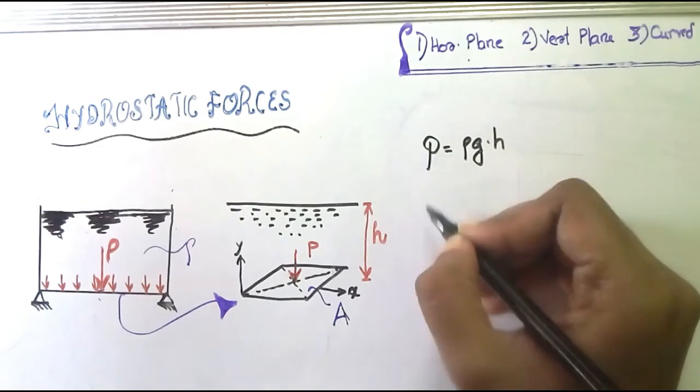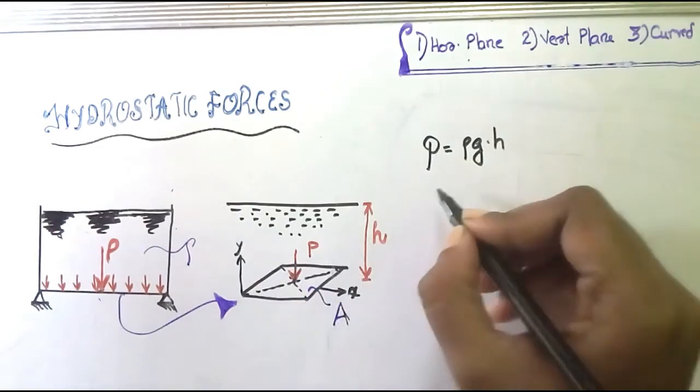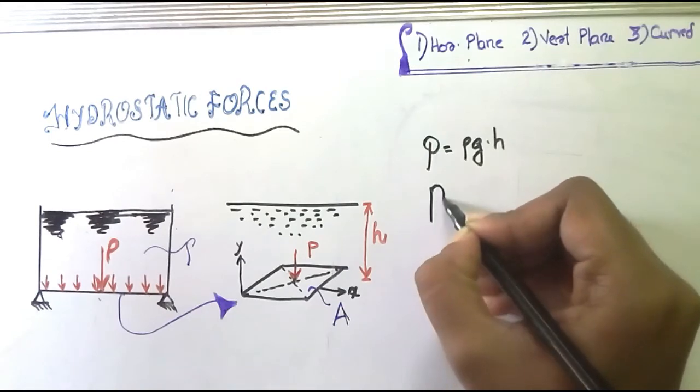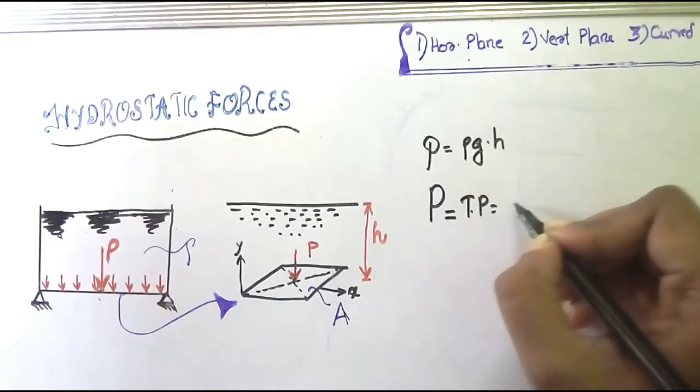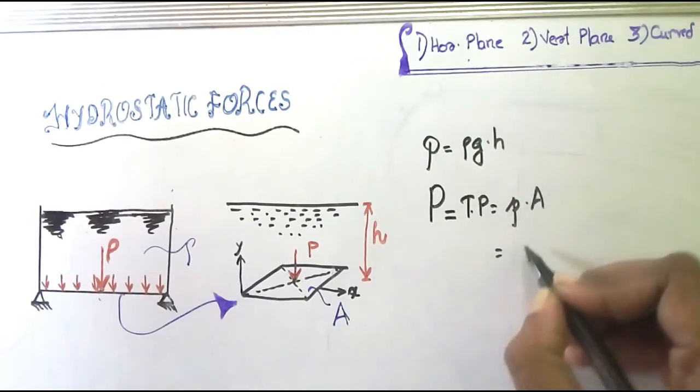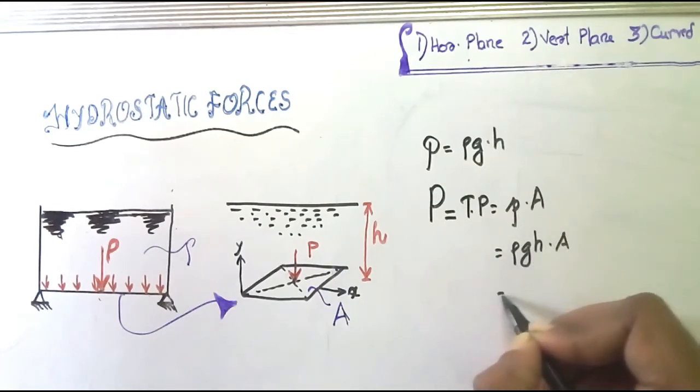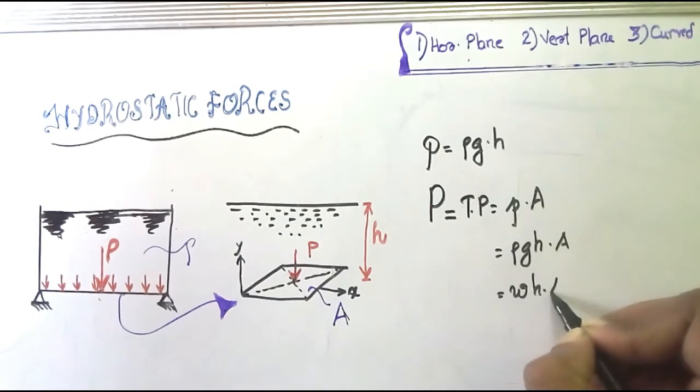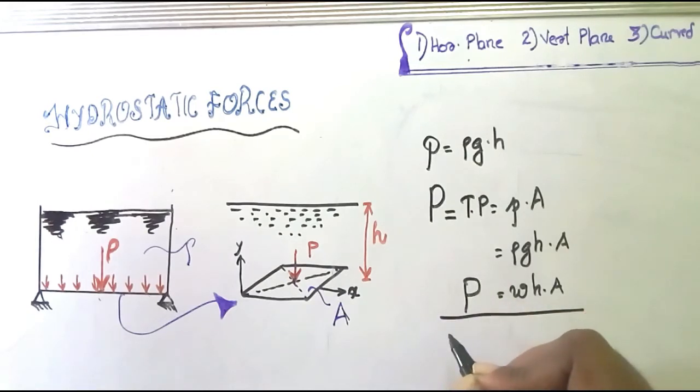What will be the force? Pressure times area. Capital P, which represents total pressure, equals small p times area. That equals ρgh times A. ρg is the specific weight W, so P equals W times h times A. This is the total pressure acting on a horizontal plane surface.